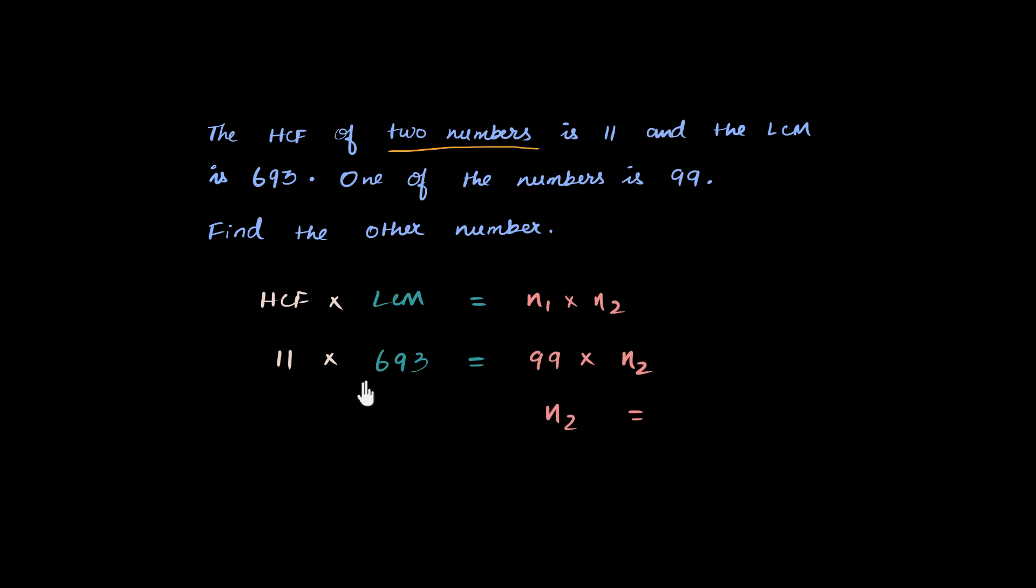N2 equals, I'm just bringing all this here. Or actually I can keep this on this side itself. It doesn't matter. So 11 into 693, 11 into 693 divided by 99. 693 divided by the 99 that I divided both sides by. So 99. And maybe we can go left side now. So what happens here?